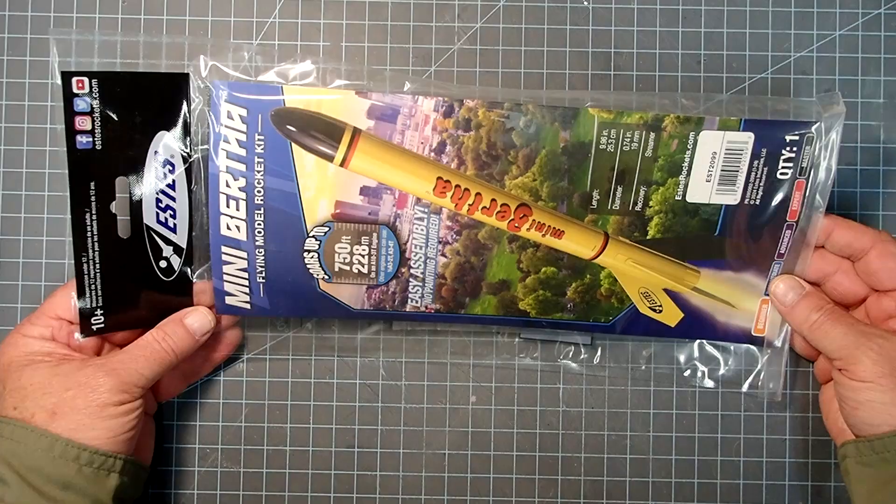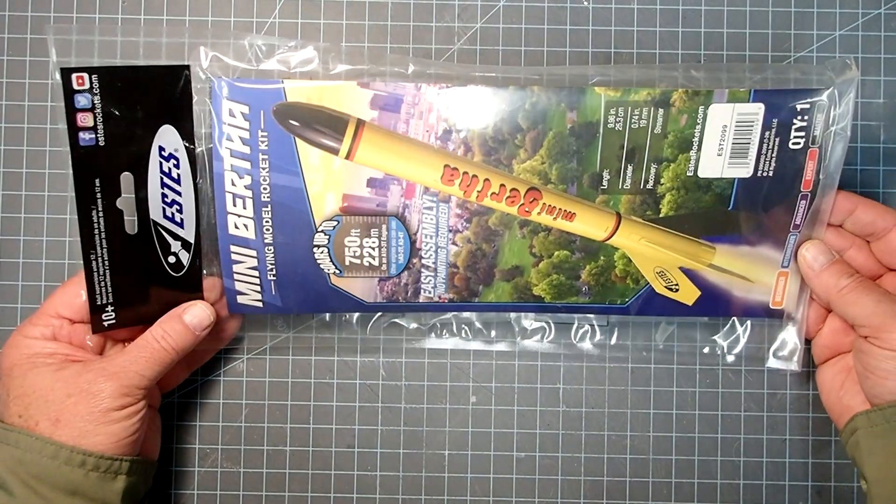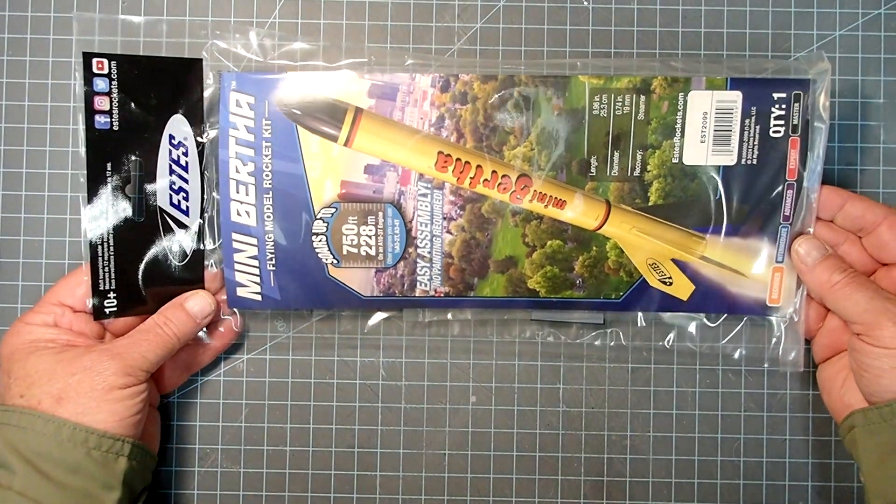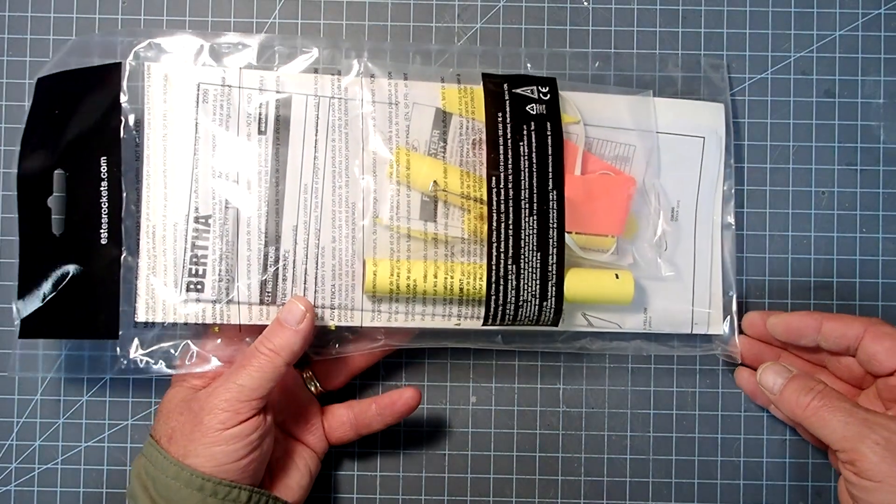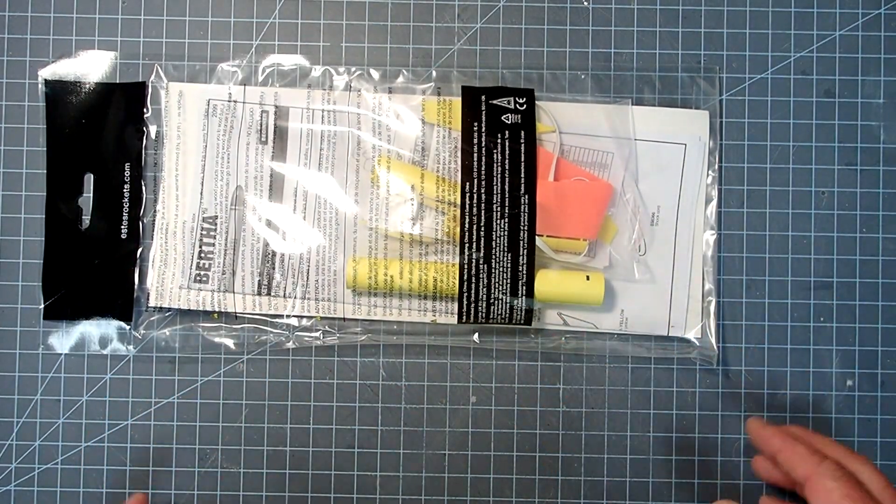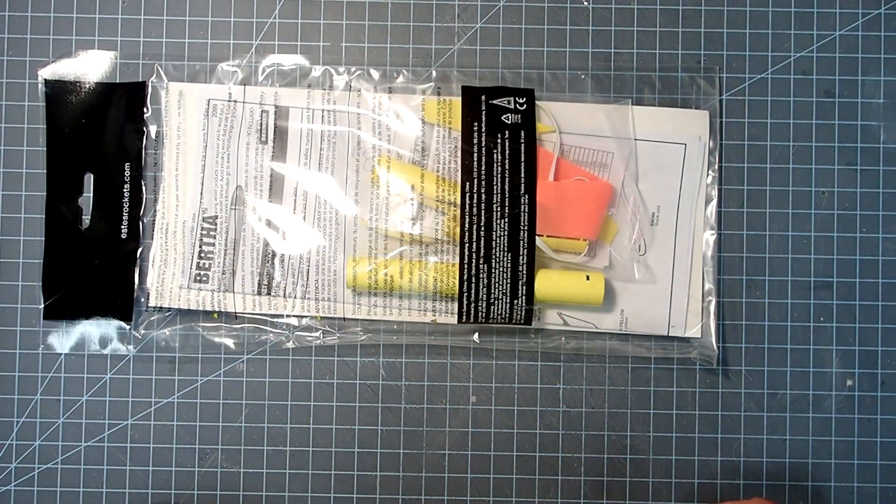Hello everyone, I'm Dave Thomas, and today I am building the Mini Bertha, which is about the fifth model in the Bertha line. Unlike its larger cousins, this goes together pretty rapidly, probably less than half an hour here.